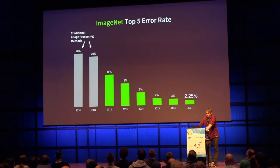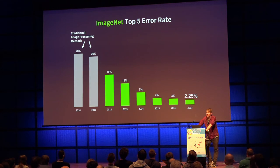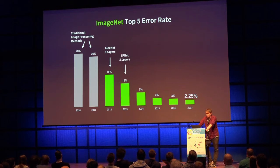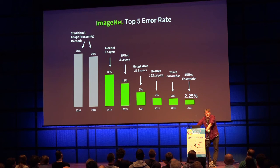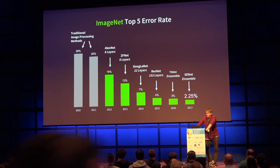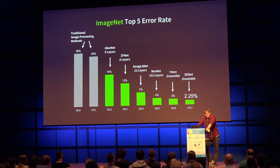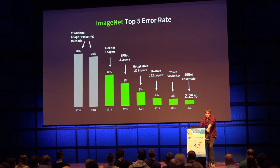Looking at the ImageNet top-five error rate: up until 2011, traditional image processing techniques had around 26% error. Then deep learning arrived — AlexNet, an eight-layer network, got around 16%. Then ZFNet in 2013 from Zeiler and Fergus; then GoogLeNet with the Inception module; then ResNet, with networks getting much deeper. By 2017, the best model had around 2.25% error rate. Andrej Karpathy — now Director of AI at Tesla — manually evaluated ImageNet images and got around 5% error, so these models are about twice as good as humans.